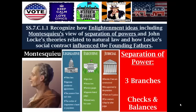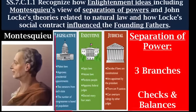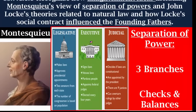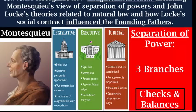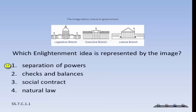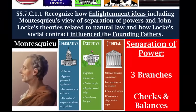The other Enlightenment philosopher you need to know is Montesquieu. He wrote about the need to separate the power of governing into three branches: legislative to make laws, executive to enforce laws, and judicial to interpret laws. The framers of the Constitution took it a step further with checks and balances. Chances are, for Montesquieu, they will give you a chart with the three branches and ask which Enlightenment philosopher influenced this — your answer is Montesquieu.